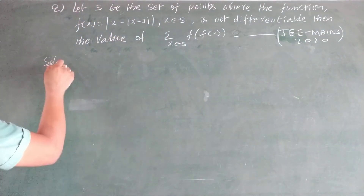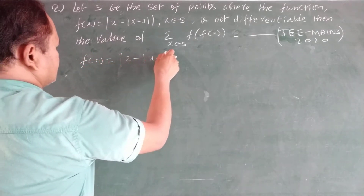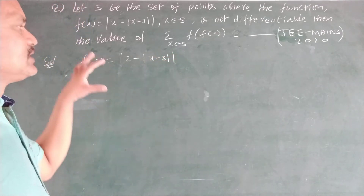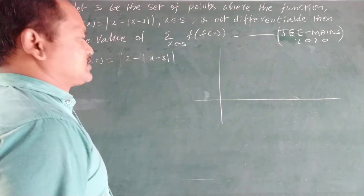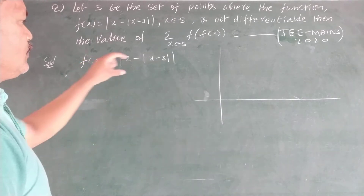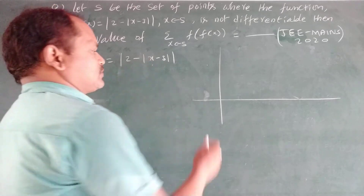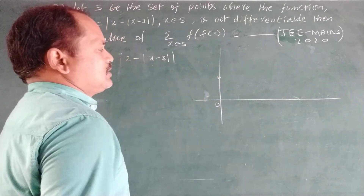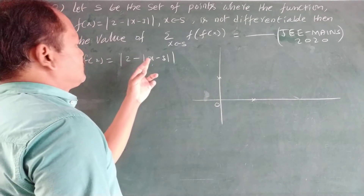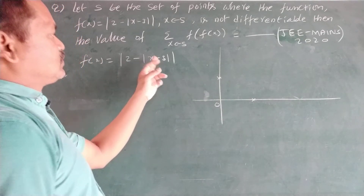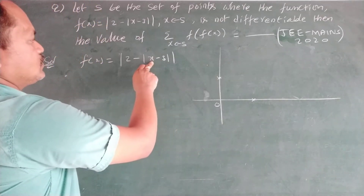Now let's look at the solution. The given function is f(x) = |mod(x) - 2 - |x - 3||. This is not differentiable at certain points, which we verify using the graph of the modulus function. For x = 0, substituting gives f(0) = 1. For x = 1, f(1) = 0. For x = 2, substituting gives f(2) = 1.